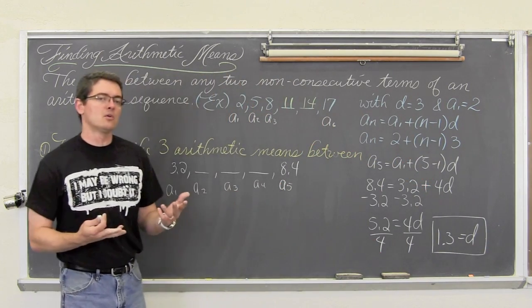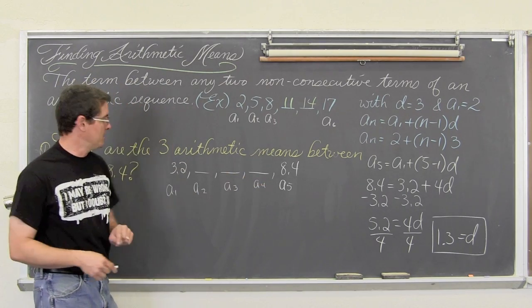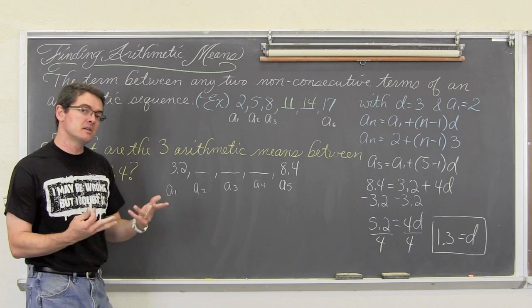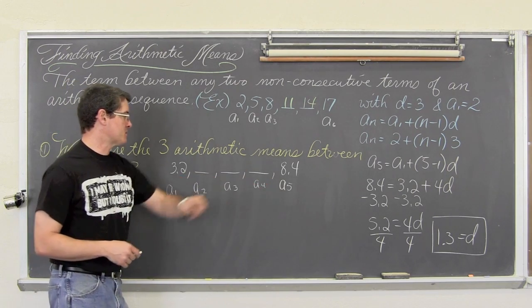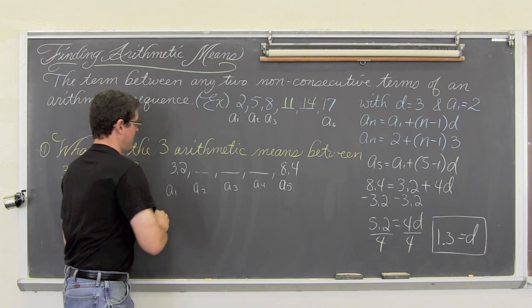And we have pretty much completed all the work that we need to answer this question. 3.2, add 1.3 because it is arithmetic, constant addition. 3.2 plus 1.3 is 4.5.